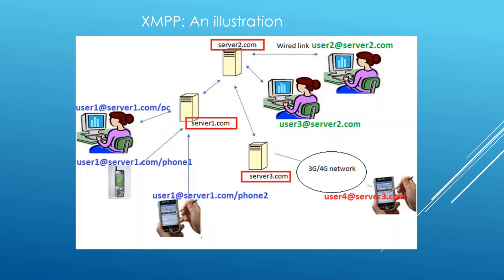Another thing you need to see in this picture is that nodes have addresses. We're going to elaborate more on these addresses later in the course. But you need to have this big picture: a network of devices connected to exchange real-time data. This is what XMPP is all about.